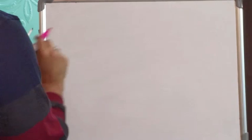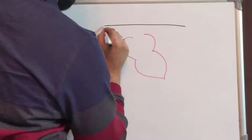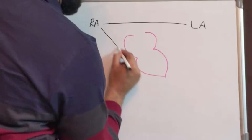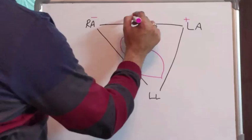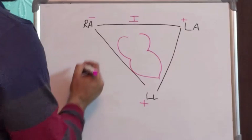Now coming to the bipolar leads. With the heart at the center, if you have an equilateral triangle connecting the right arm, the left arm and the left leg. The lead with its positive pole at the left arm and negative electrode at the right arm is lead 1. The lead with its positive electrode at the left leg and negative electrode at the right arm is lead 2.